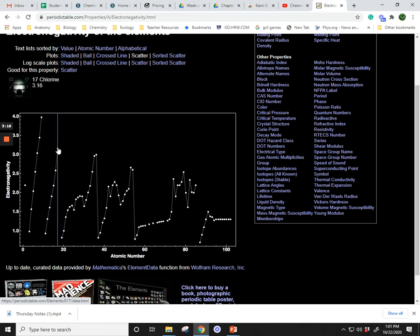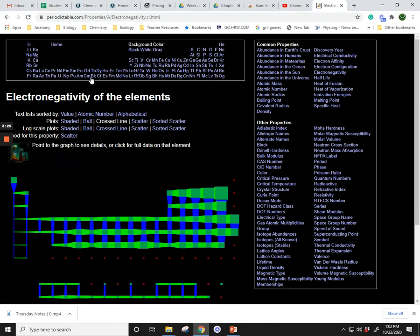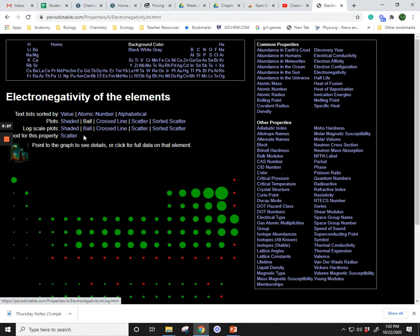And then as you go down the group, if we looked at the noble gases going down the group, we see that they decrease. You can also look at it with a cross line or we can look at it with the ball, which gives you a better visual.